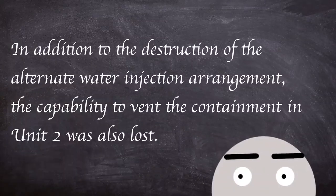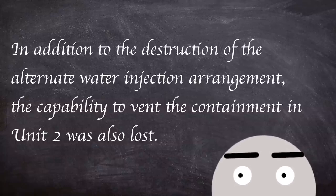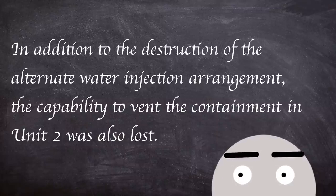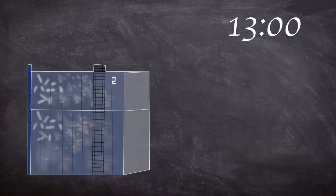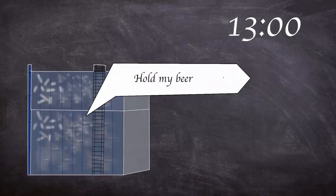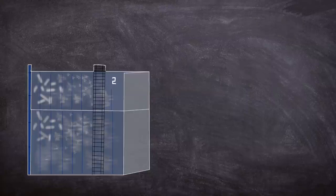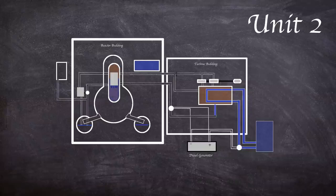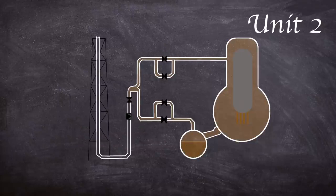In addition to destruction of the alternate water injection arrangement, the capability to vent containment in unit 2 was lost. At around 1 pm on the 14th, unit 2 began to experience cooling issues as well. In what seems a repeating theme, reactor pressure increased as cooling water level decreased. To enable low pressure fire truck water pumping, safety valves were operated to drop reactor pressure.